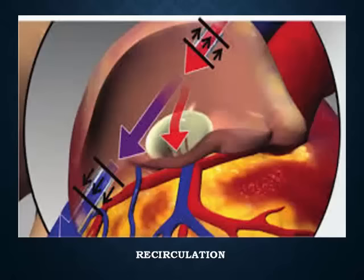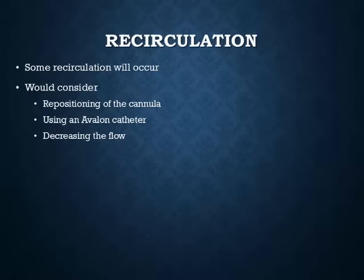The access cannula takes blood away and oxygenated blood mixes back near the cavoatrial junction — the higher the saturation of that mixed blood, the higher your inline readings. This is recirculation, and it's why the Avalon catheter is better — the ports are more divided. When you suspect recirculation, check whether access and drainage cannulas have migrated or are too close together. Reevaluate your chest and abdominal x-rays to confirm cannula position, and notify cardiothoracics — don't manipulate the cannulas yourself.